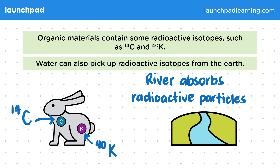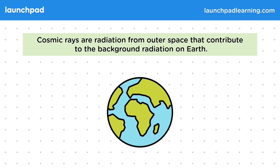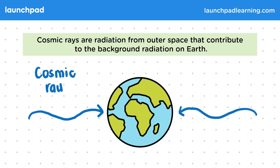Are there any other sources of background radiation that don't originate on Earth? Cosmic rays are radiation from outer space that contribute to background radiation on Earth. Cosmic rays reach the Earth in the form of electromagnetic waves that travel through vacuum. They can also cause nuclear reactions in the atmosphere, which create unstable isotopes. You don't need to know all of these sources in detail, but you should remember as many as you can as you could be asked to give examples in an exam.